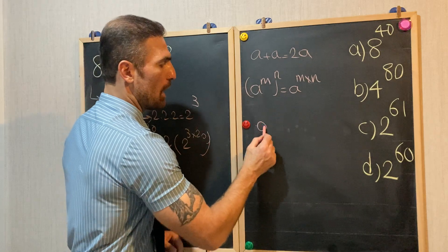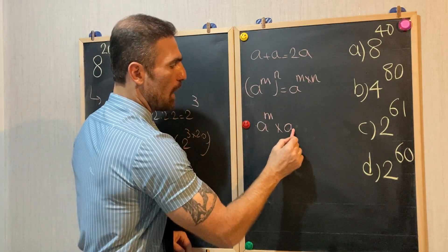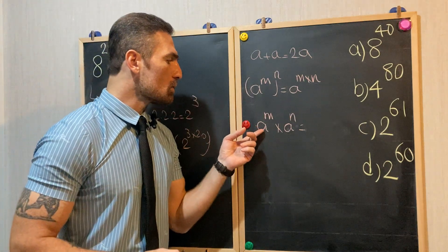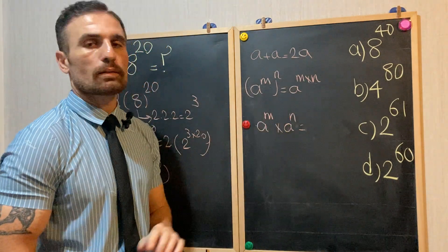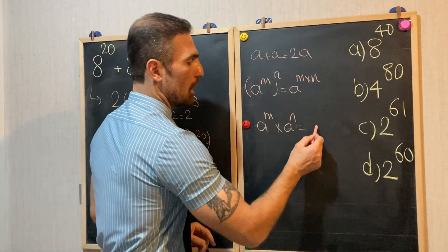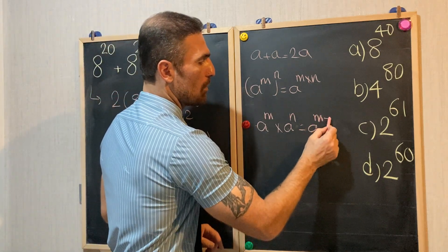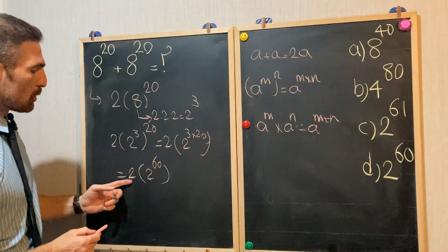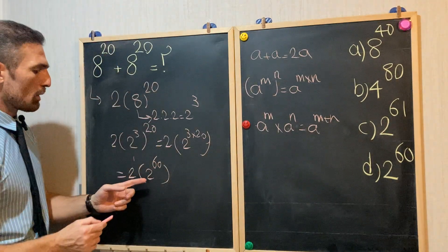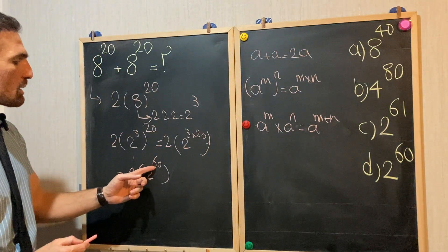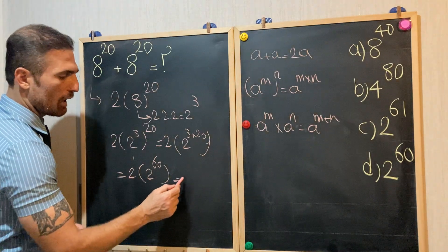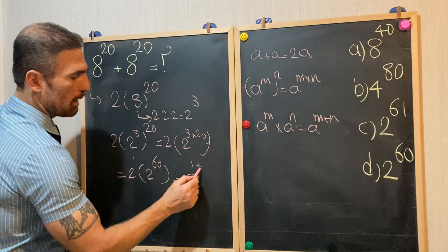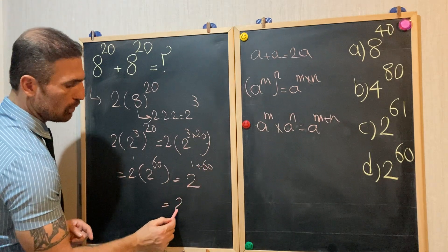The next rule: a to the power of m times a to the power of n — attention, same bases, different exponents — equals a to the power of m plus n. We are going to use this rule to continue our solution. 2 is 2 to the power of 1, times 2 to the power of 60. Since they have the same base, we can write one base and add the exponents, giving us 2 to the power of 61.